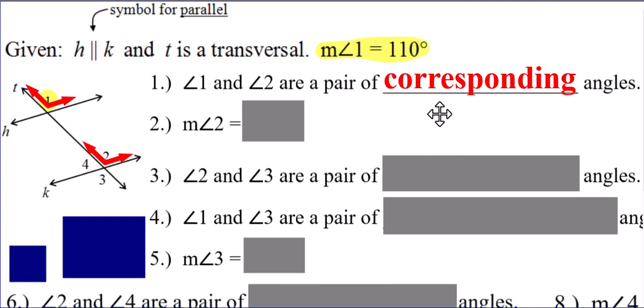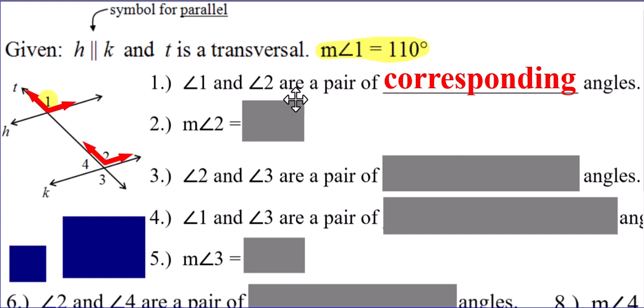Now, if you're wondering why we care what type of angles they are — well, because we can then get the measure of angle two. It just so happens that corresponding angles are congruent to each other, and you can kind of see that — they're like the exact same type of angle. So if the measure of angle one, which we were already given in the directions, is 110 degrees, then the measure of angle two is also 110 degrees.